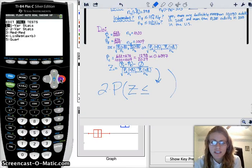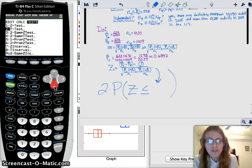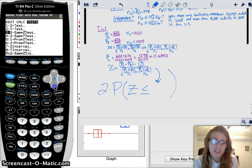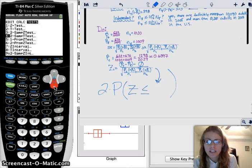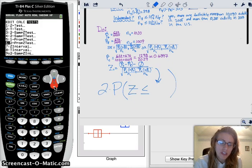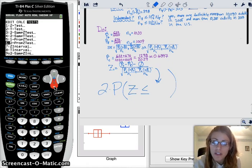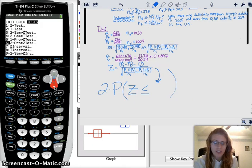So then I go to stat tests, and I have two samples. So is it this one? No, because it's a Z test and then a T test. But down here, we have a two-proportion Z test. We have two samples, it's proportions, and we're doing a test. So it's not an interval. So it is going to be six.